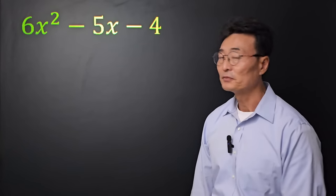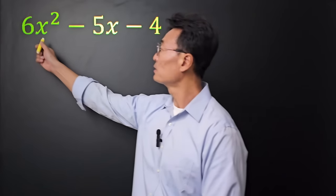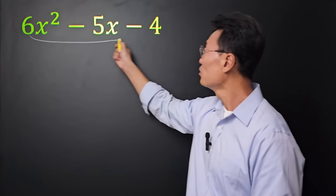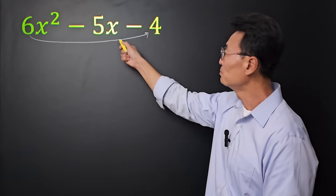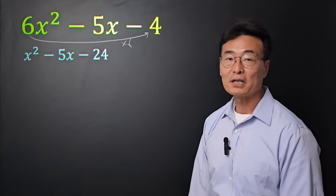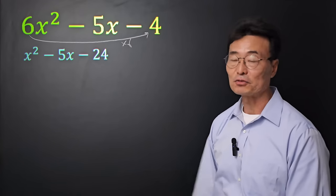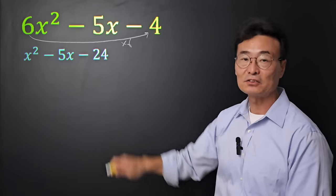Here's the second example. Just as in the first example, I'm going to take the leading coefficient, the 6, multiply it to the c value. Where we get x squared minus 5x minus 24. Next, we're going to factor this thing.